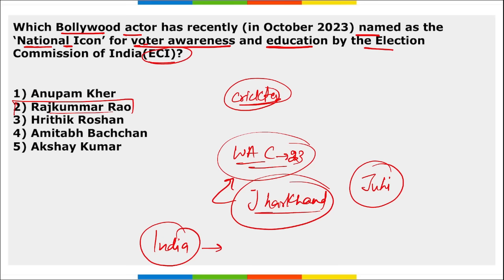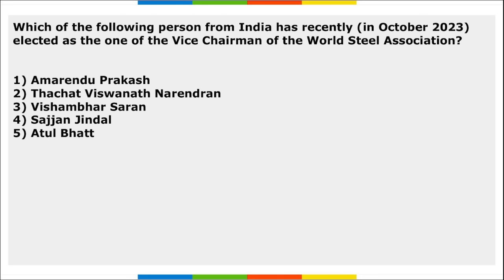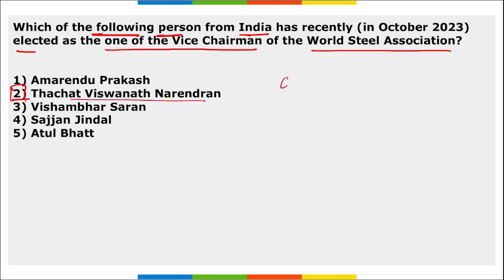India is pushing developed nations to achieve carbon neutrality by the year 2050. Thachat Vishwanath Narendran has been recently elected as one of the vice chairmen of the World Steel Association. The Global Maritime India Summit was inaugurated by Prime Minister Narendra Modi.